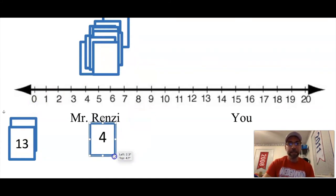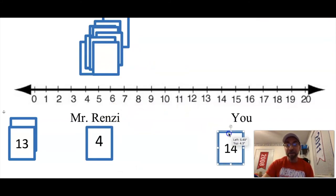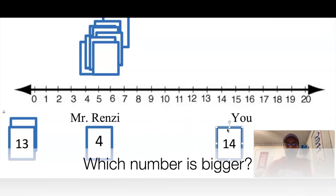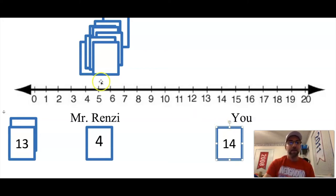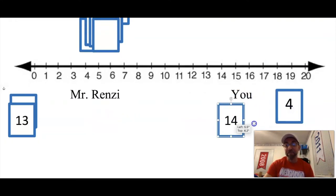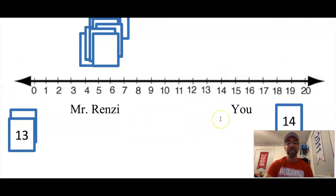Let's play another round. This time, Mr. Renzi has 4 and you have 14. Oh, which number is the bigger number? 4 appears here on my number line and 14 is all the way down here. 14 is my bigger number. So that means the winner of Top It is the number 14. So you would win that time. So now, it's 2 to 2.